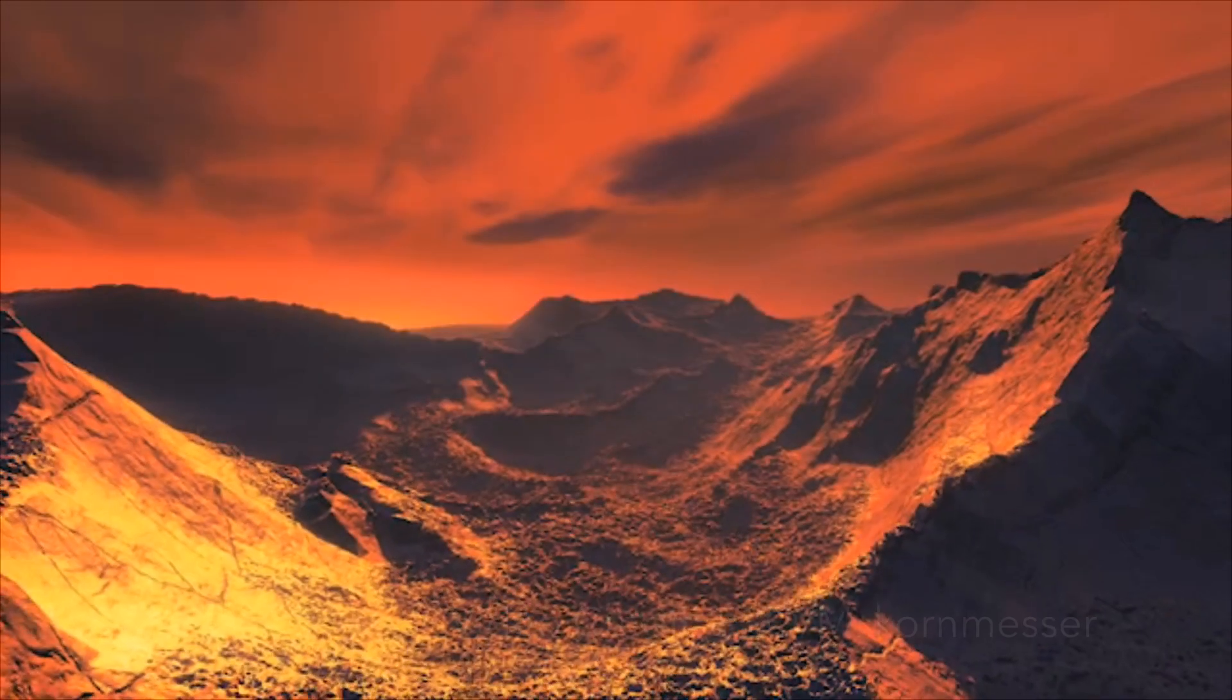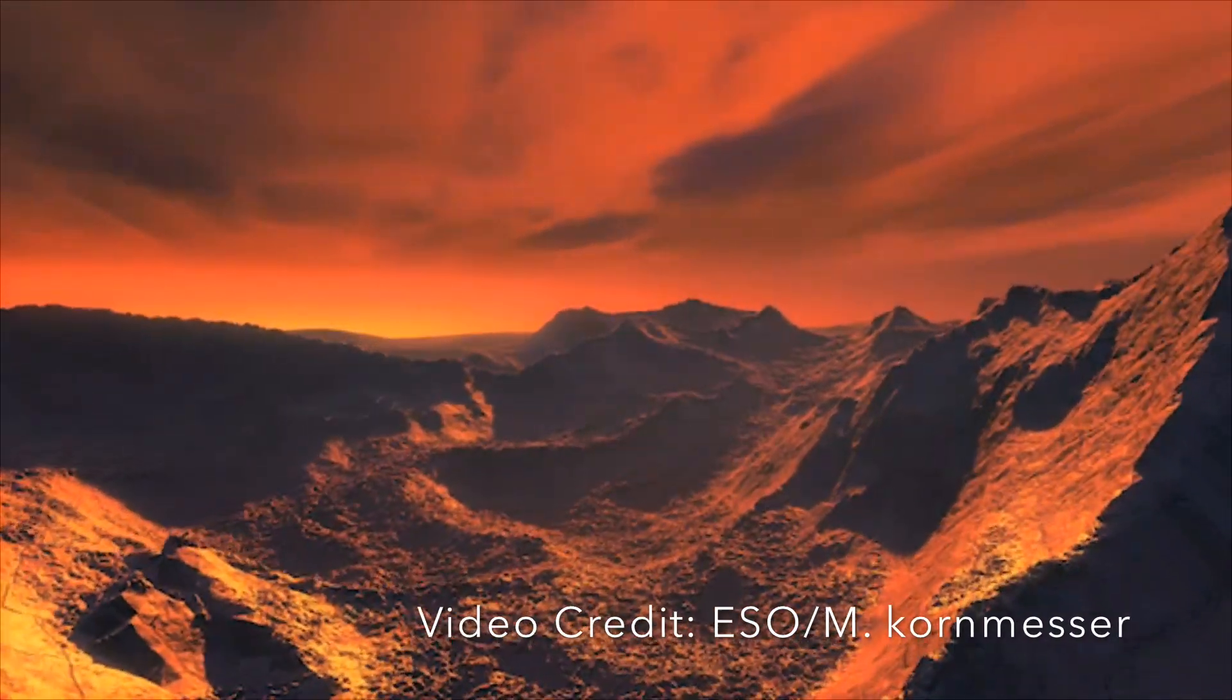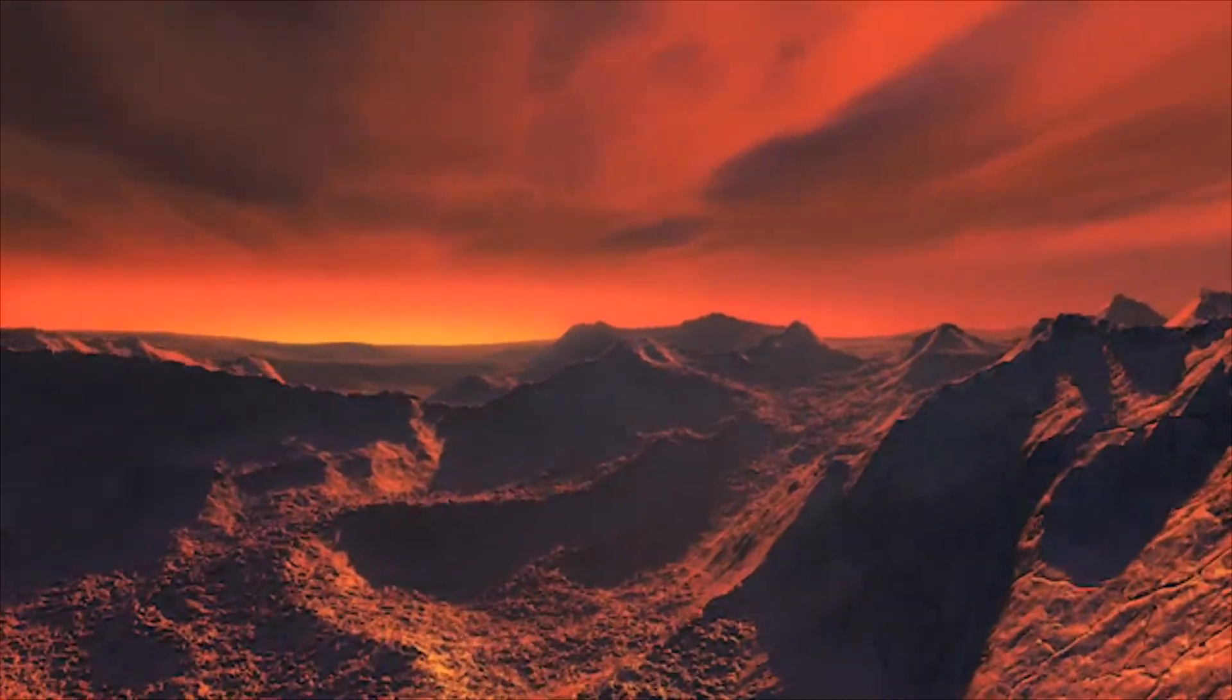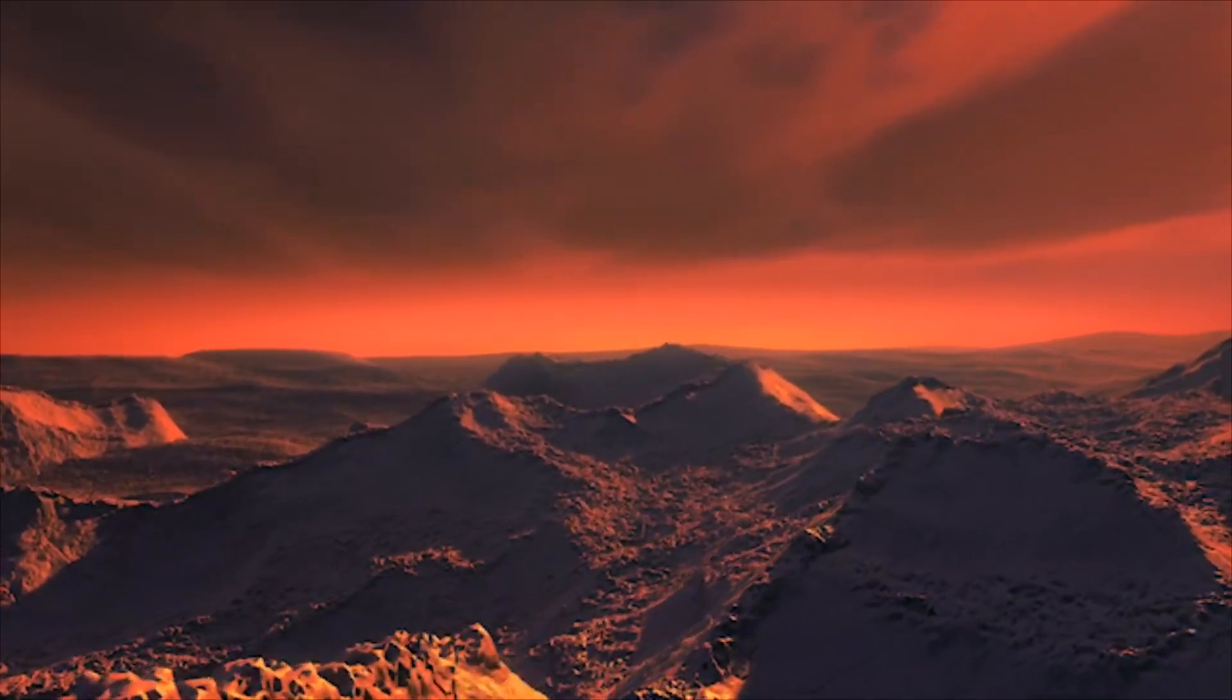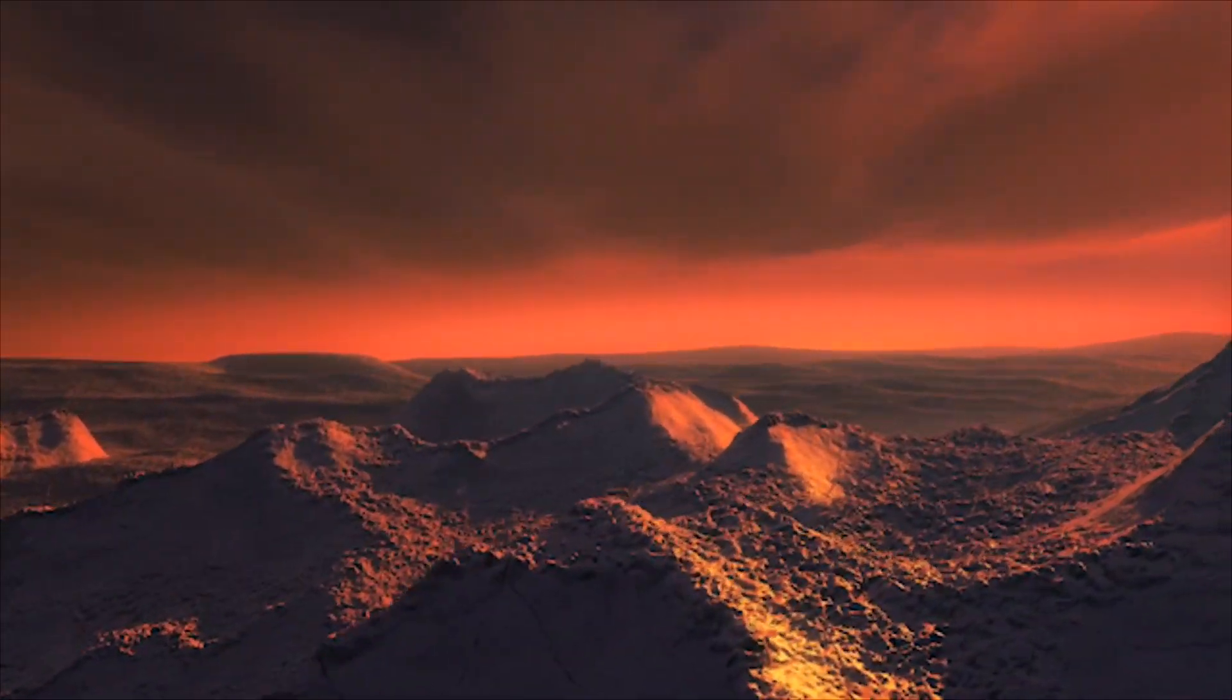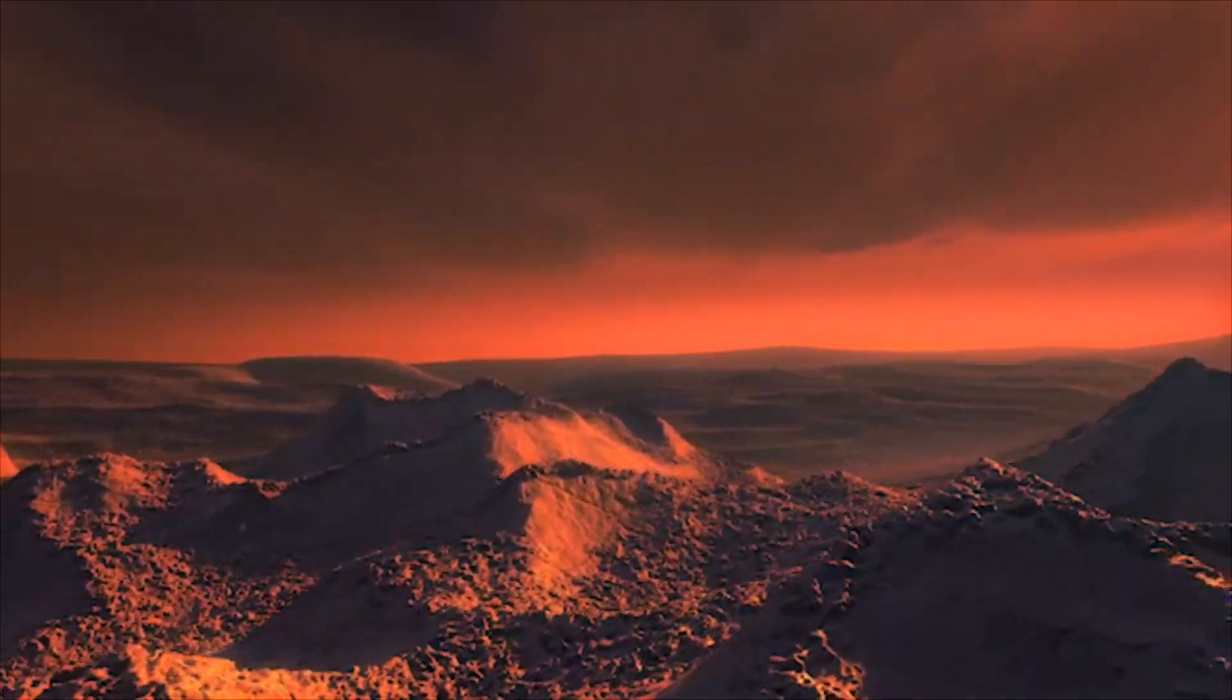Super-Earths are the most common type of planet to form around low mass stars such as Barnard's star, lending credibility to this newly discovered planetary candidate. Furthermore, current theories of planetary formation predict that the snow line is the ideal location for such planets to form.